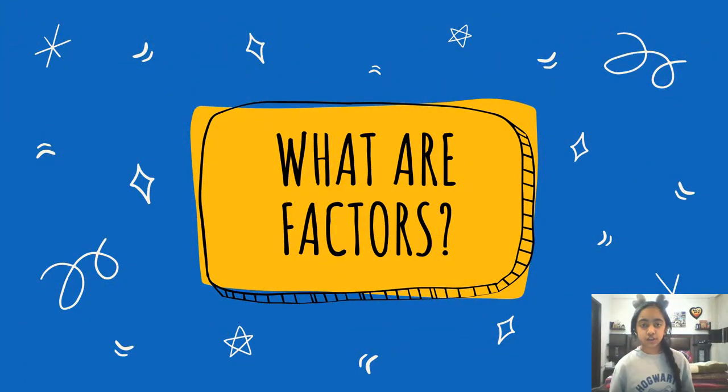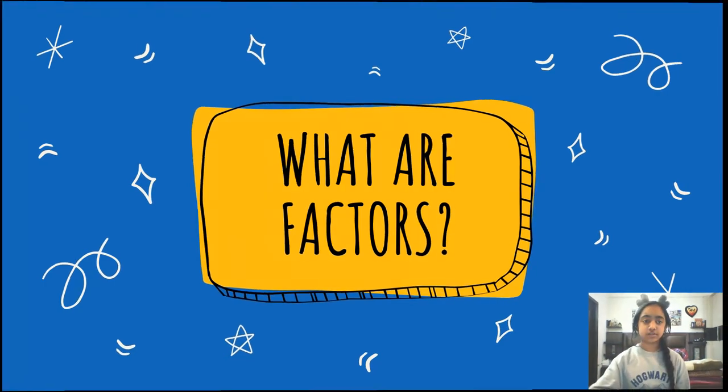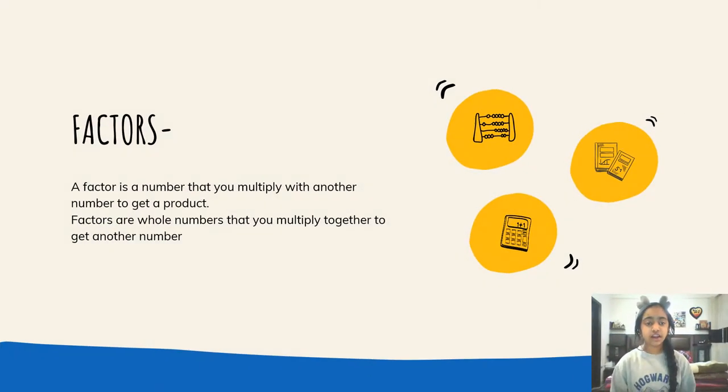First of all, what are exactly factors? A factor is a number that you multiply with another number to get a product. Factors are whole numbers that you multiply together to get another number. For example, 2 times 3 is 6. So 2 and 3 are factors and 6 is the product.